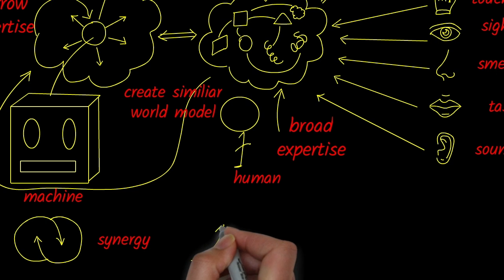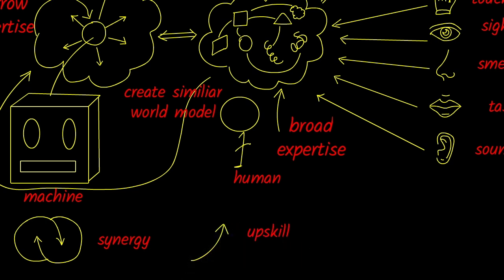Invest in upskilling. Provide training to help your team master AI tools and develop uniquely human skills, like critical thinking and emotional intelligence. Staying ahead of industry trends ensures that your team remains competitive and confident in a rapidly evolving landscape.